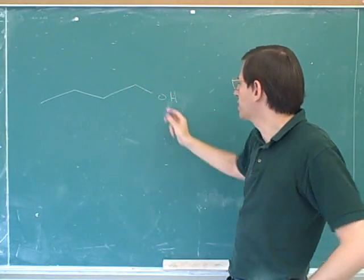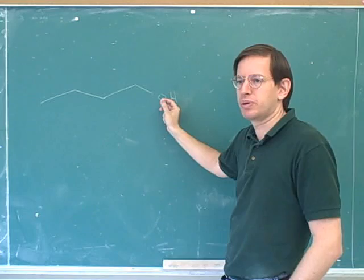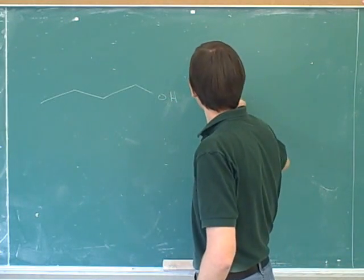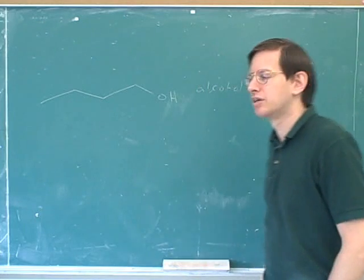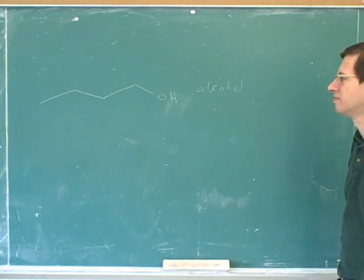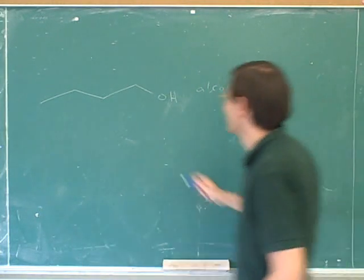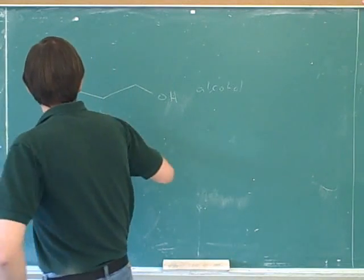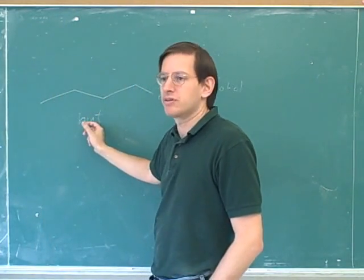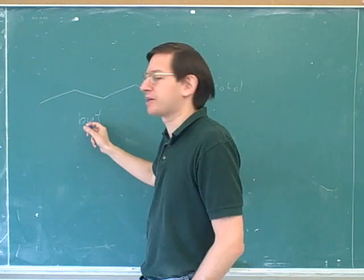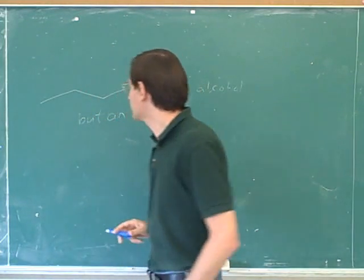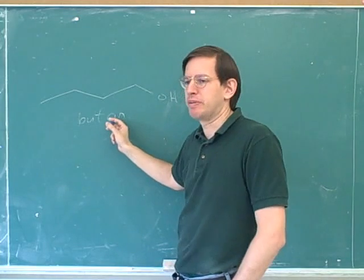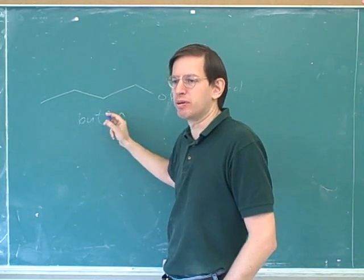Well first of all, what is the general name for this type of functional group? Alcohol. Do you know what the name for this particular alcohol is? Butanol? Excellent. It's called bute because there are four carbons. Now a lot of students don't realize that the 'an' has a separate meaning.